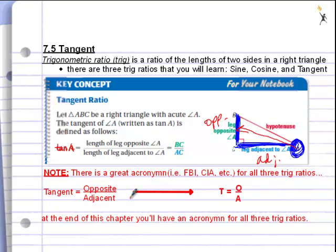You're going to have three different abbreviations for sine, cosine, and tangent. The easiest way to remember tangent is TOA, T-O-A. And again, you'll learn another one for sine and another one for cosine.